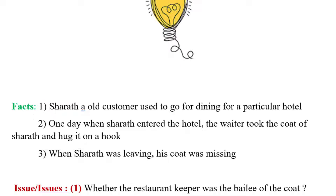Here I have simplified the facts in this way: Sharath, the old customer, used to go for dining at a particular hotel — that means he is the customer of the hotel. One day when Sharath enters the hotel, the waiter took the coat of Sharath and hung it on a hook behind him, out of courtesy. When Sharath was leaving the hotel, his coat was missing. These are all the facts of the case.